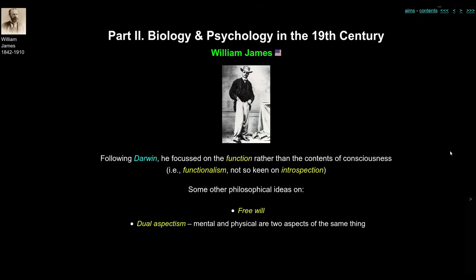Another psychologist directly influenced by Darwin was William James in the United States, who focused on the function of consciousness rather than its contents. In contrast to structuralists like Wundt and Titchener — who sought to examine the mind's structure and identify its atoms of thought — James's approach was functionalism: not so important what the mind is made of, but what it does and what it's for. James was not particularly interested in introspection.